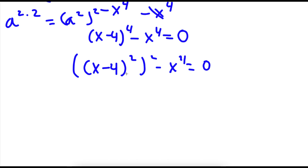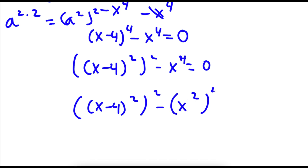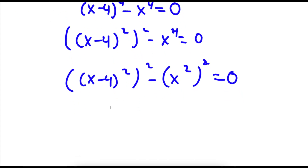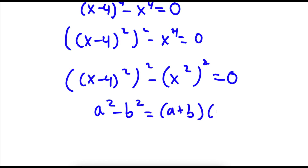So now I have x minus 4 squared to the power of 2, minus x to the power of 4, which I'm going to rewrite as x squared to the power of 2. Now, if I have something in the form a squared minus b squared, this is equal to a plus b times a minus b. So in this case, I have x minus 4 squared to the power of 2, minus x squared to the power of 2.